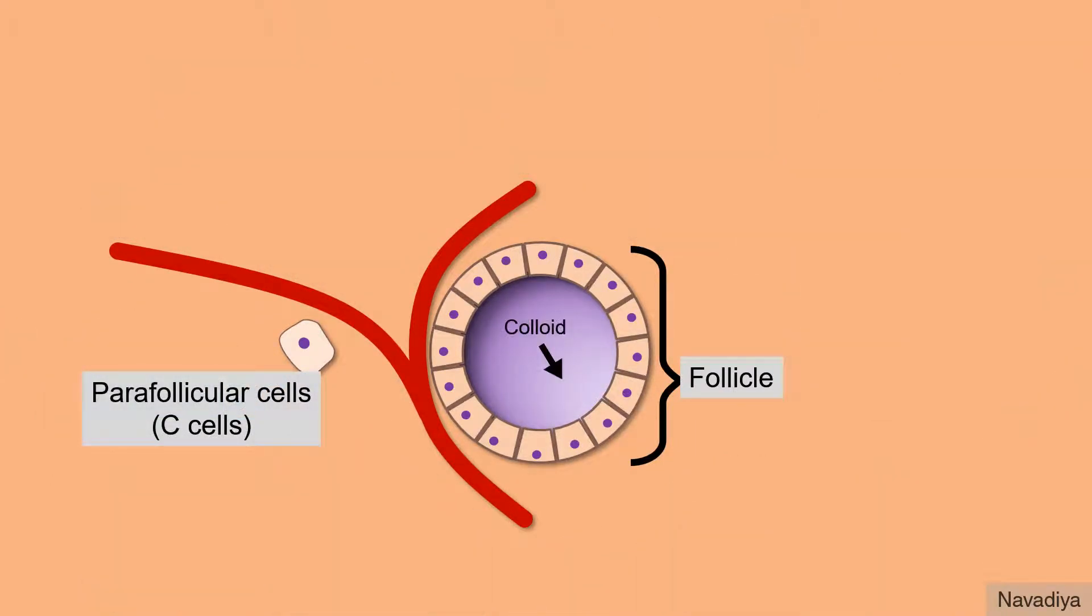Follicle has colloid at the center surrounded by follicular cells. Thyroxine and triiodothyronine are synthesized by follicle. C-cells synthesize calcitonin.